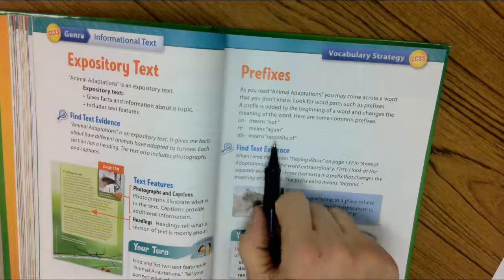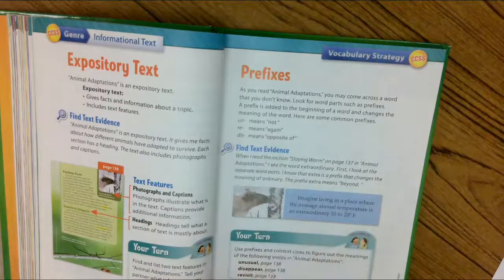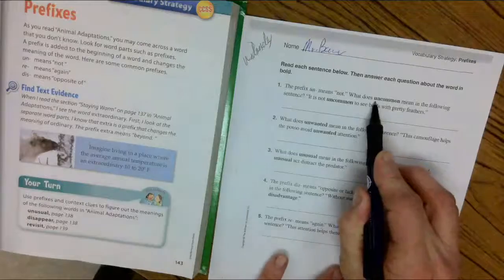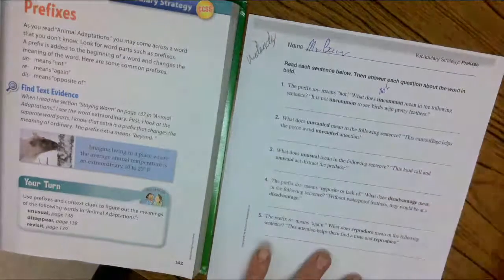And dis means the opposite of. So if we're taking a look at our assignment here, we would say un means not. It is not common.